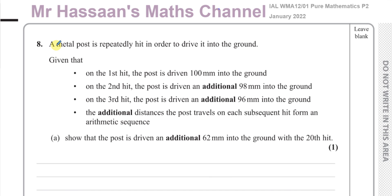This question is about a metal post which is repeatedly hit in order to drive it into the ground. On the first hit, the post is driven 100 millimeters into the ground; on the second hit, an additional 98 millimeters; on the third hit, an additional 96 millimeters. The additional distances form an arithmetic sequence. We need to show that the post is driven an additional 62 millimeters on the 20th hit.